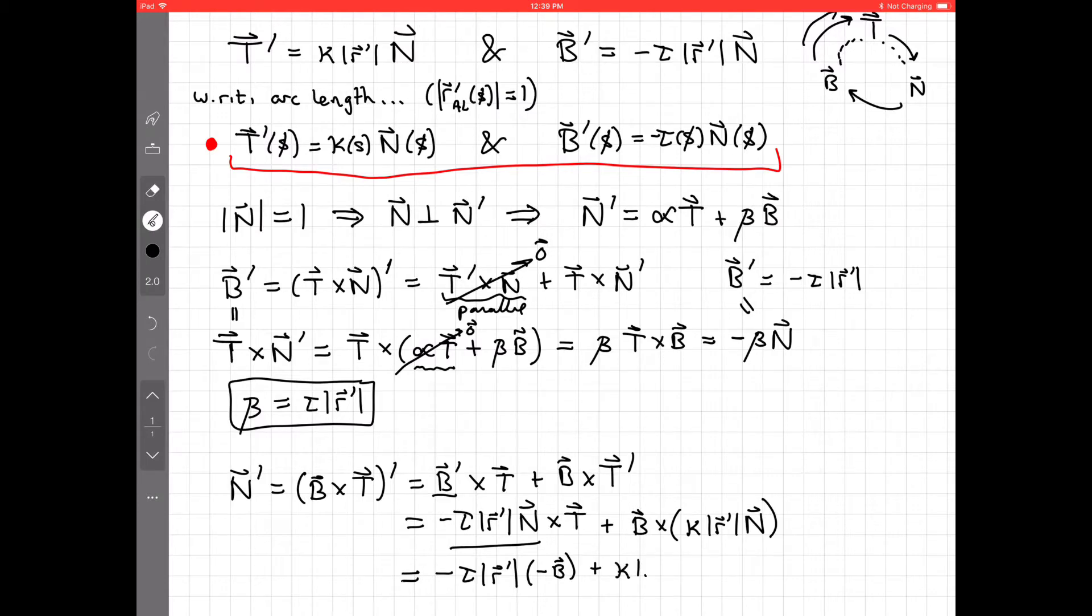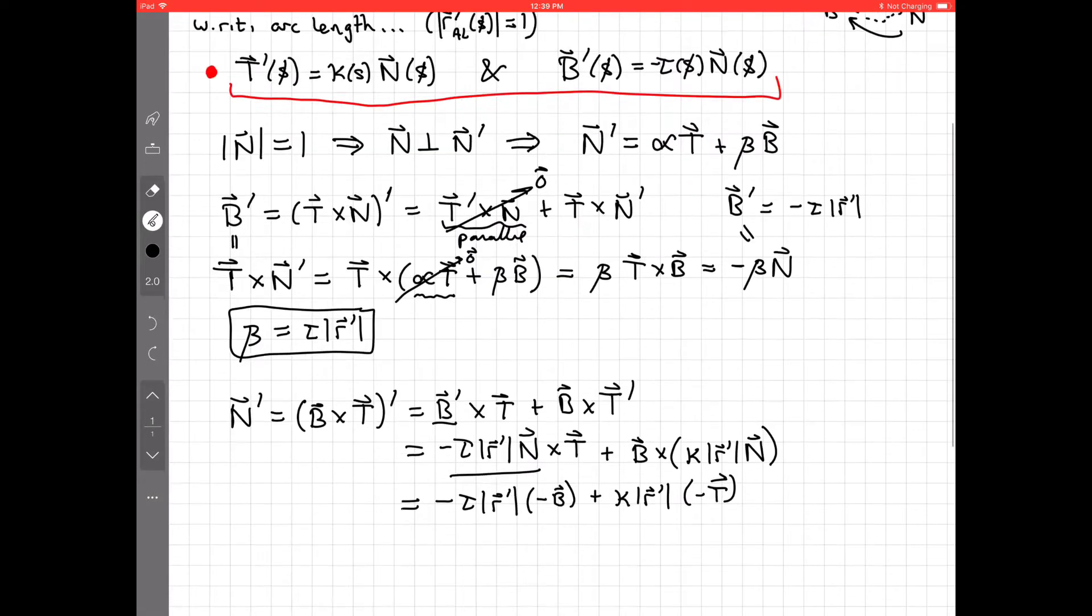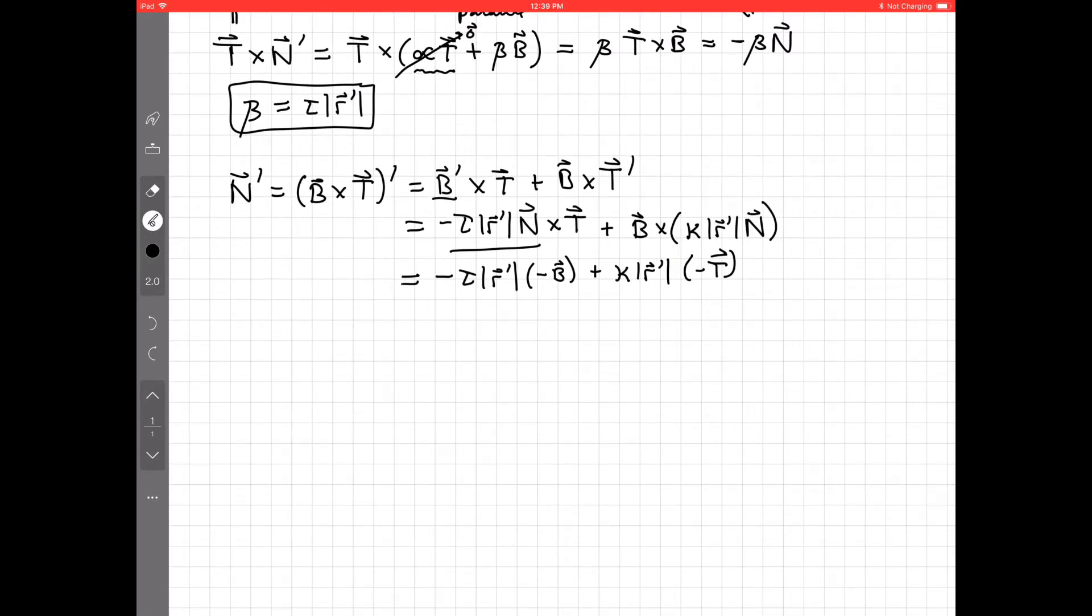n cross t fights the circle, so that's minus b. And then we have kappa speed. What's b cross n? Well, b cross n, again, fights the circle. That's minus t. So, oops, undo that.